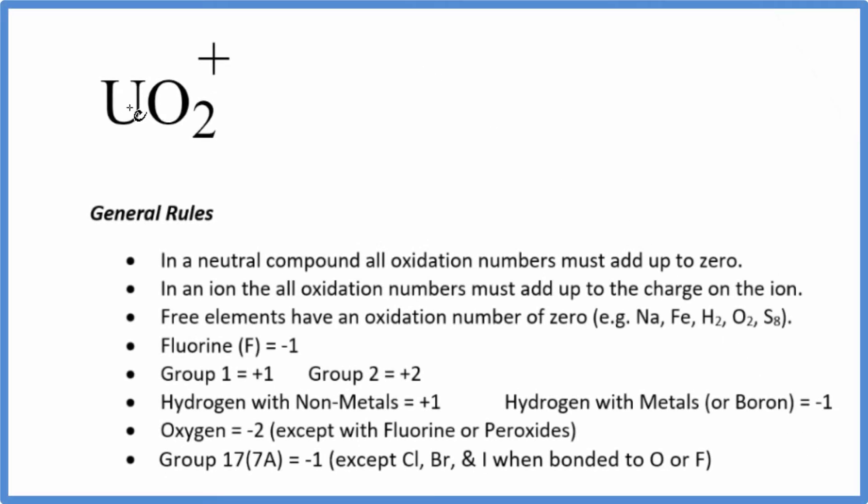In this video, we'll find the oxidation numbers for each element in UO2 plus. The first thing to note is that we have this positive sign up here. That means this is an ion. When we have an ion, all the oxidation numbers add up to the charge on the ion.